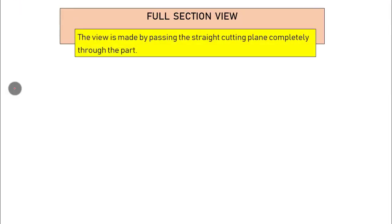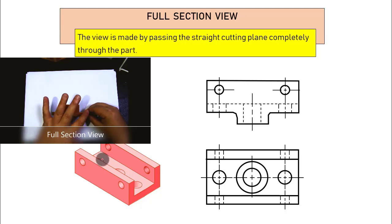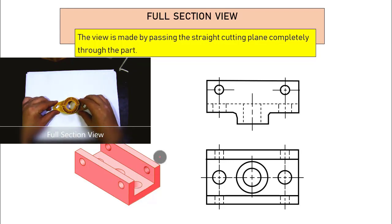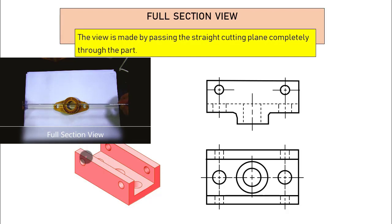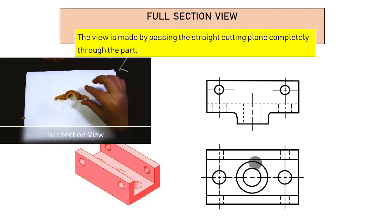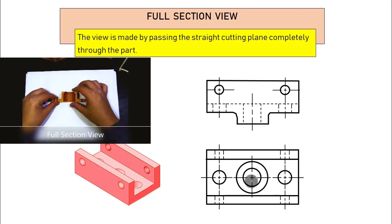Full section view is made by passing a straight cutting plane line completely through the object — from the beginning to the end. Using a 3D-printed part as an example, I cut the part from first to last, then separate it and look at the part from inside. When you remove one half and flip it, what you see from inside is the section view.